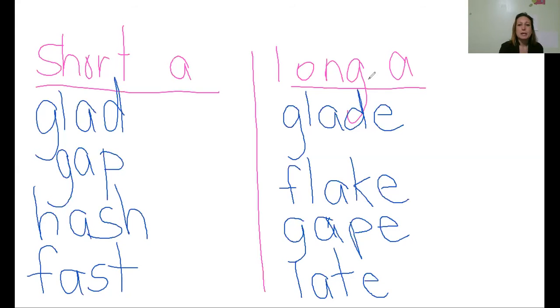Let's do one more. Let's do name. I hear N, A, M. I hear my A saying A, so I'm going to write it in my long A column. N-A-M. My A says its name so I'm putting the E on the end.